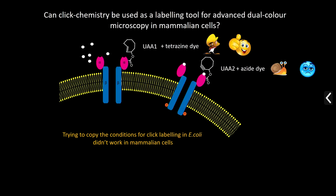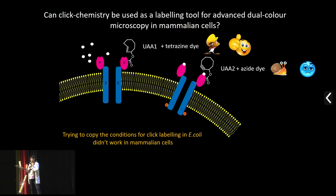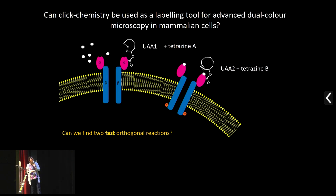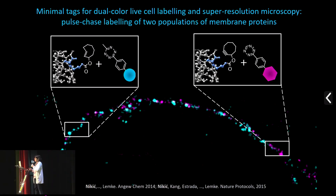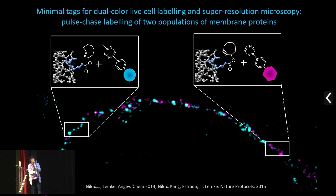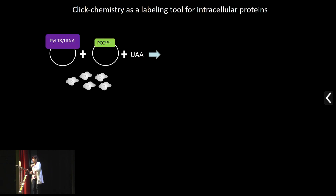We then realized it really depends on your model system — something that works in bacteria will not simply work in mammalian cells. So we wondered: can we find two fast orthogonal reactions by using two different tetrazine chemistries? We managed to find two orthogonal tetrazine ligations: here you can see the surface of a HEK cell with two populations of insulin receptors, labeled simultaneously with the two chemistries. This was also the first demonstration that this type of chemistry can be used for super-resolution microscopy — in this case, STORM imaging.